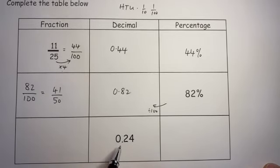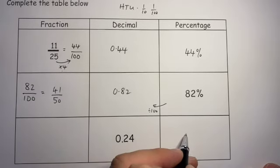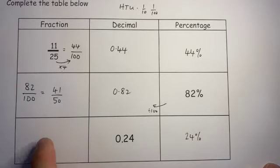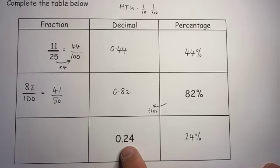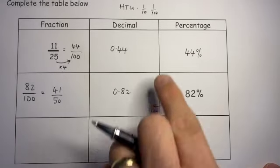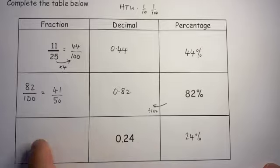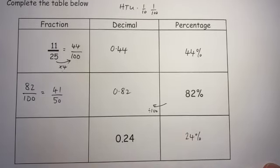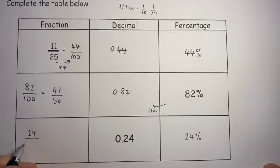So likewise, to get from there to the percentage, I times by 100, so I've got 24 percent. From either one of these, I can see that I've got over 100: 24. Why? Because that goes into the hundredths column, so 24 hundredths. But 24 means 24 out of 100, so 24 over 100.